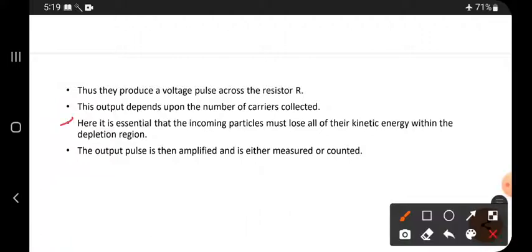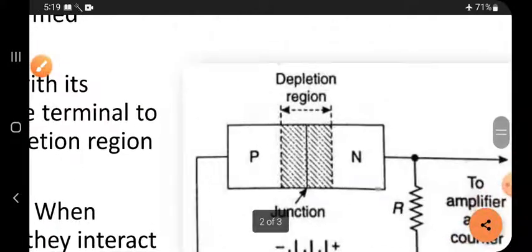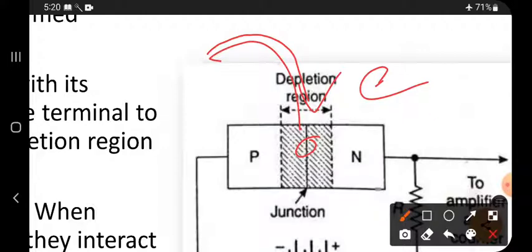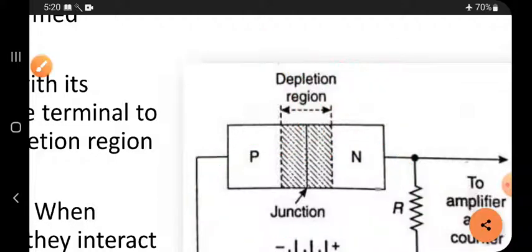It is essential that the incoming particle must lose all its kinetic energy within the depletion region only. When a charged particle is coming and falling on the depletion layer, they produce electrons by striking or interacting with them. They have to lose total energy. This total energy will be used by the electron, then the electron comes outside. The coming outside electron travels and reaches the positive charge, and a vacancy is created. That vacancy is called a hole, and the hole travels.